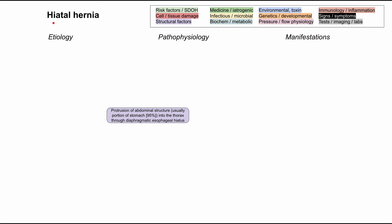We'll start with the definition of hiatal hernia. Hiatal hernia is a protrusion of an abdominal structure into the thorax through the diaphragmatic esophageal hiatus. This is the hole through which the esophagus passes through the diaphragm, and when you have a piece of the abdominal structure poking through it, it's a hiatal hernia. Usually this abdominal structure is a portion of the stomach — that's in 95-plus percent of cases.